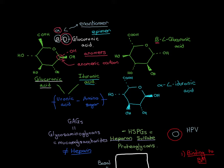In order to understand this term, we need to know what heparan sulfate is. Heparan sulfate is an example of a type of polysaccharide known as a glycosaminoglycan. Glycosaminoglycans are polymers of disaccharides that all have this basic form drawn here in blue. They all consist of a uronic acid sugar glycosidically bound to an amino sugar.